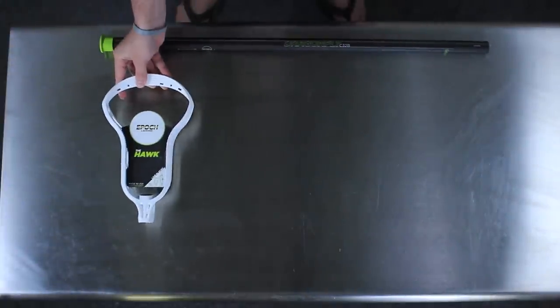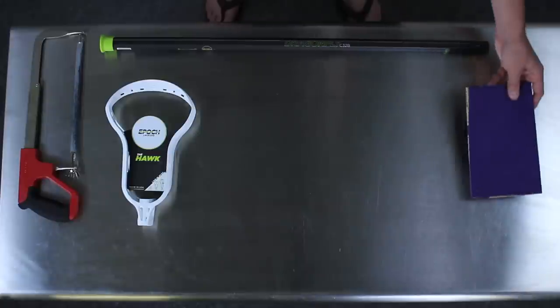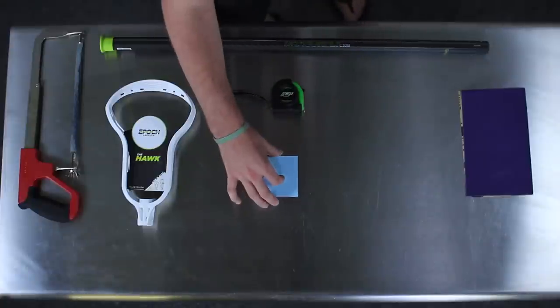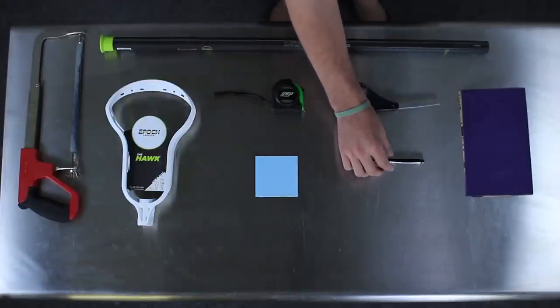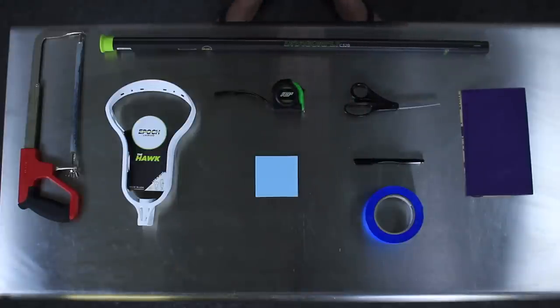To cut your lacrosse shaft, here are the basics of what you'll need: your lacrosse stick, a head, hacksaw, sandpaper, a tape measure, post-it notes, scissors, a marker, and some athletic tape. If you're running low, any sort of tape will do.